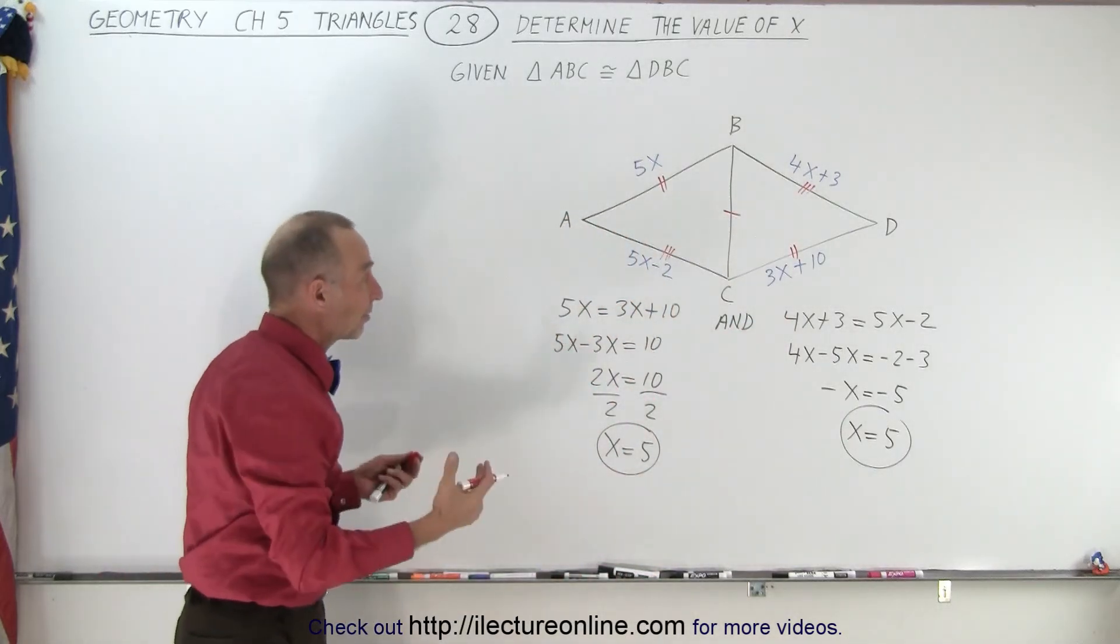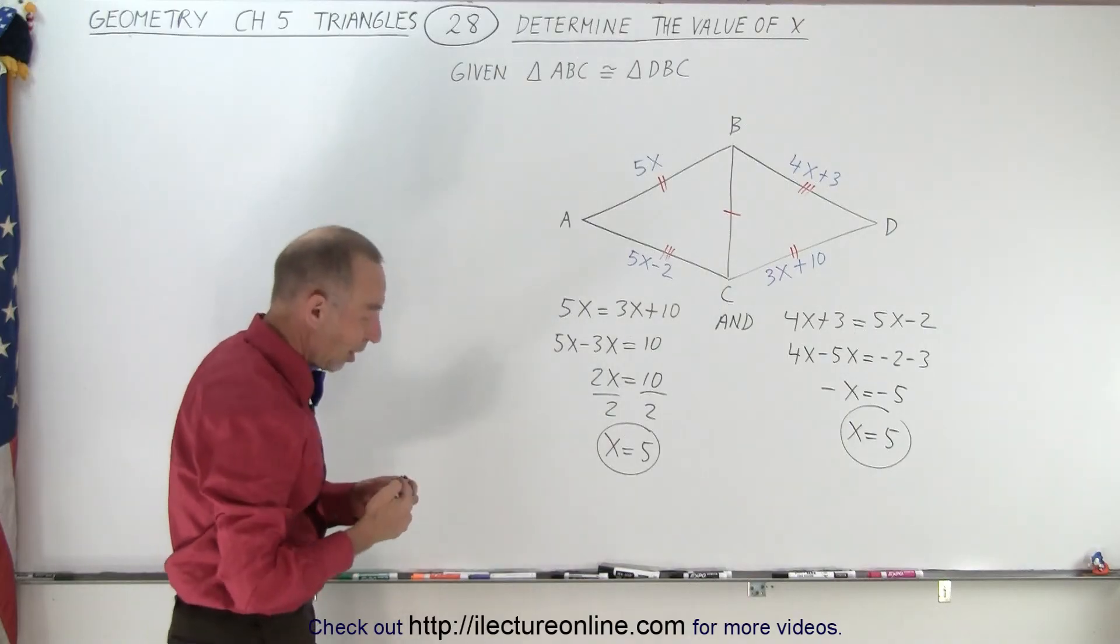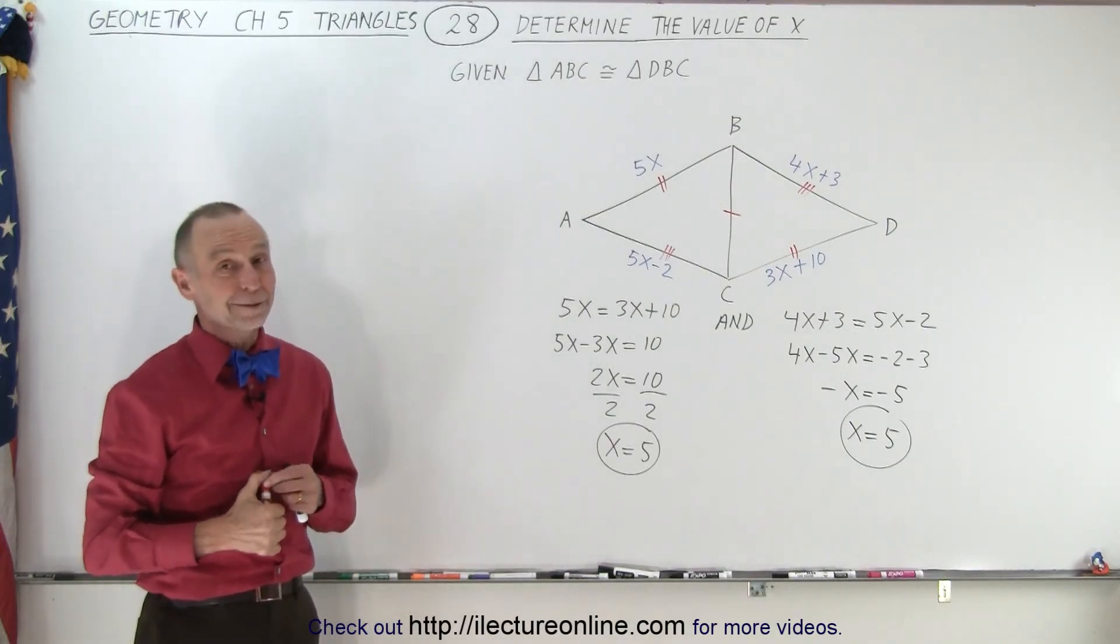And we have determined that, yes indeed, when x equals 5, the two triangles are indeed congruent. And that is how it's done.